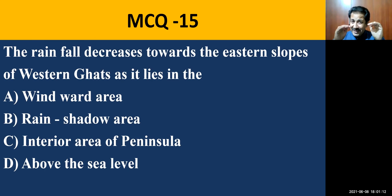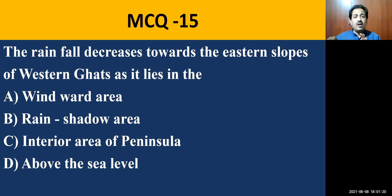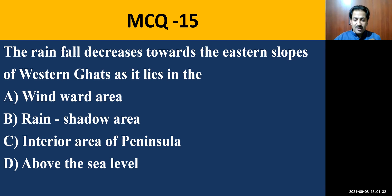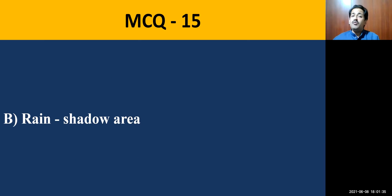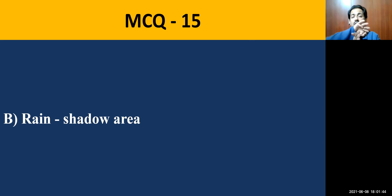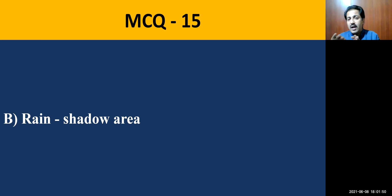MCQ question number fifteen: the rainfall decreases towards the eastern slope of the Western Ghats as it lies in the — windward area, rain shadow area, interior area, or interior area above sea level. The correct answer is rain shadow area, also called the leeward area. The mountains prevent the winds from crossing, so as you go away from the mountain, there will be progressively lower rainfall.